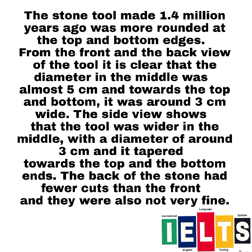Now we have to divide the whole task into two body paragraphs. The stone tool made 1.4 million years ago was more rounded at the top and bottom edges. From the front and the back view of the tool, it is clear that the diameter in the middle was almost 5 cm and towards the top and bottom it was around 3 cm wide. The side view shows that the tool was wider in the middle with a diameter of around 3 cm and it tapered towards the top and the bottom ends. The back of the stone had fewer cuts than the front and they were also not very fine.